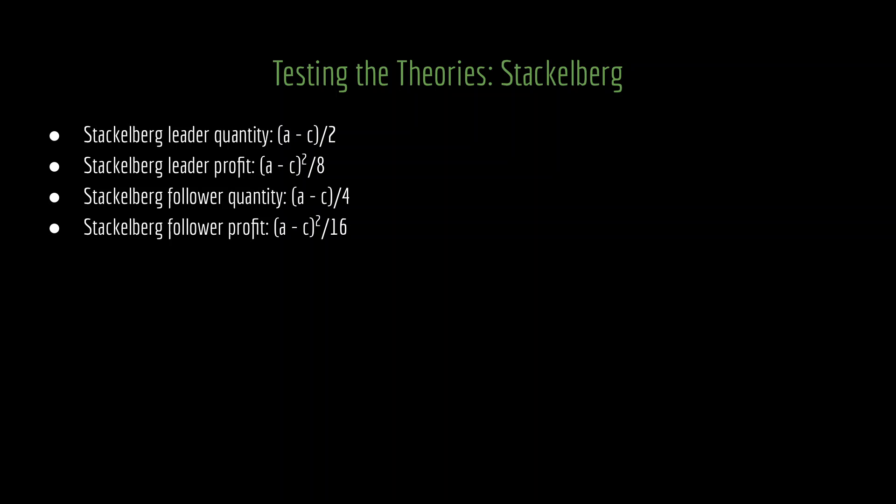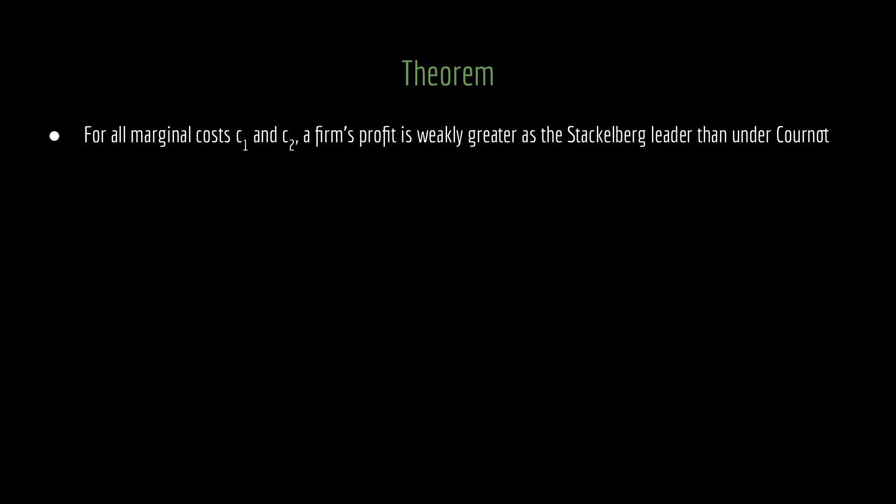That's an interesting result with symmetric firms — but does this apply more generally? In fact, it does. We have a theorem: for all marginal costs C1 and C2 — allowing firms to be asymmetric, so C1 could be large and C2 small or vice versa — it doesn't matter. For all marginal costs C1 and C2, a firm's profit is weakly greater as the Stackelberg leader than under Cournot.